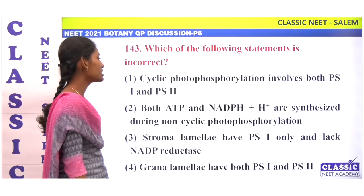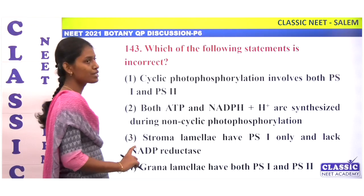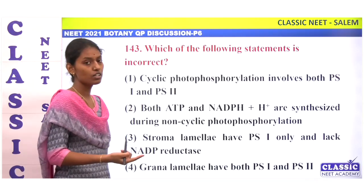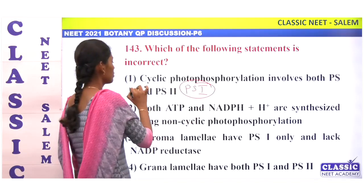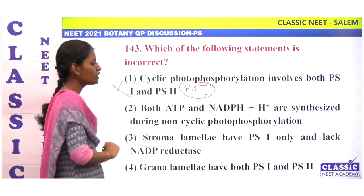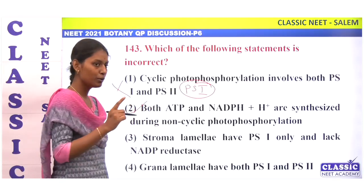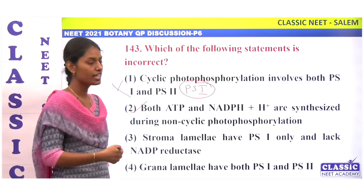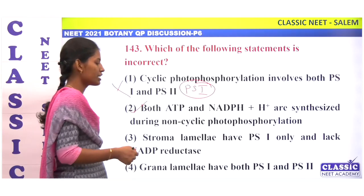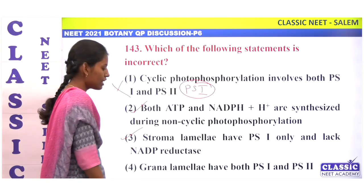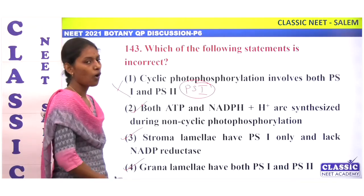Which of the following statements is incorrect? Cyclic photophosphorylation involves both PS1 and PS2 — this is incorrect; cyclic photophosphorylation involves only PS1. Non-cyclic involves both PS1 and PS2. Stromal lamellae have PS1 only but lack NADP reductase — correct. Granal lamellae have both PS1 and PS2 — correct. Incorrect statement is option 1.